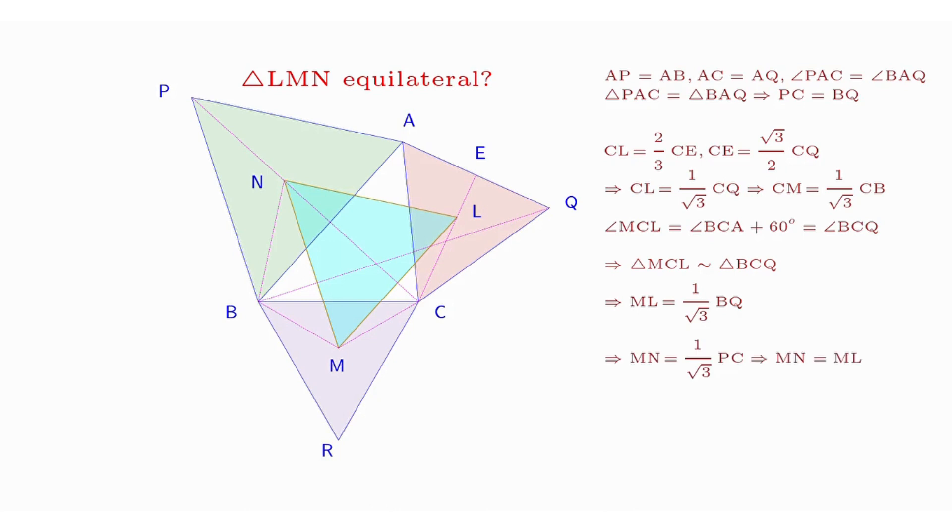Similarly, one can arrive at MN equals PC divided by √3. As proven earlier, PC equals BQ. Thus, MN equals ML.